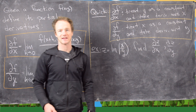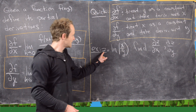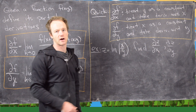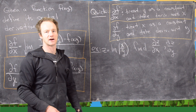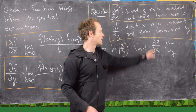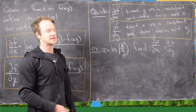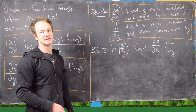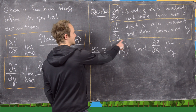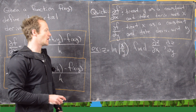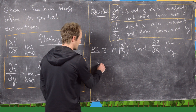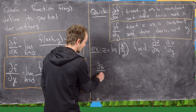So let's do one last example. Let z equal the natural log of x over y. Here x and y are independent variables and z is the dependent variable. We want to find ∂z/∂x and ∂z/∂y. We're going to have to use the chain rule because we have the function x over y composed inside the natural log. So let's calculate ∂z/∂x first.